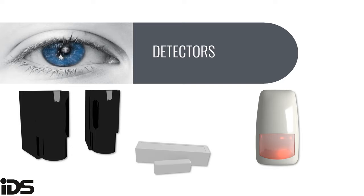Passive infrareds are the most common devices used in security systems today. A PIR detects the change in temperature in a specific area; if the change is sufficient, it triggers an activation. There are also many other detector types that sense vibrations, glass breaking, water levels, temperatures, gas, and more — but PIRs and the detectors already covered are the most common.